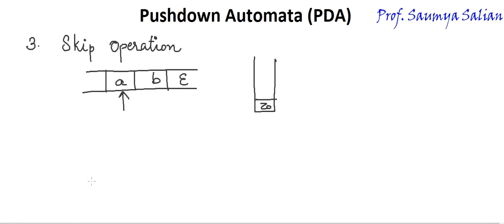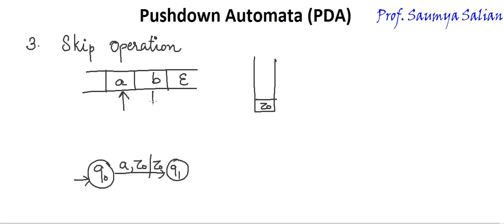PDA allows one more operation — skip operation on stack. That is on reading an input, perform skip operation, meaning do nothing. Starting from state Q0: on reading A with stack top Z naught, do nothing — do not change the top of the stack. Z naught remains as it is, read state Q1. Now reading B with stack top still Z naught. Do nothing, write Z naught once again. This is how we perform skip operation.